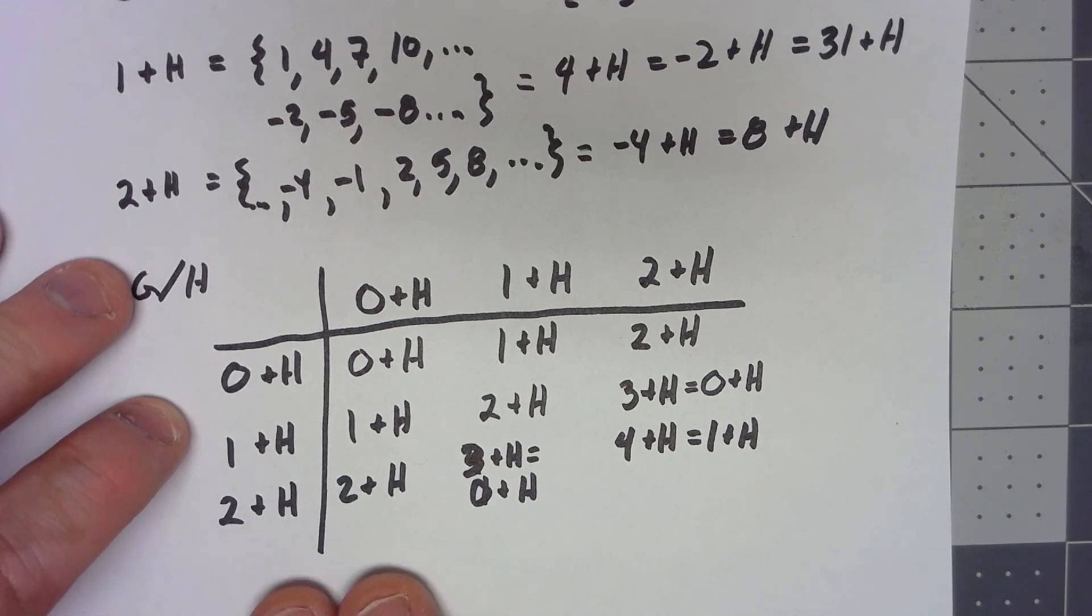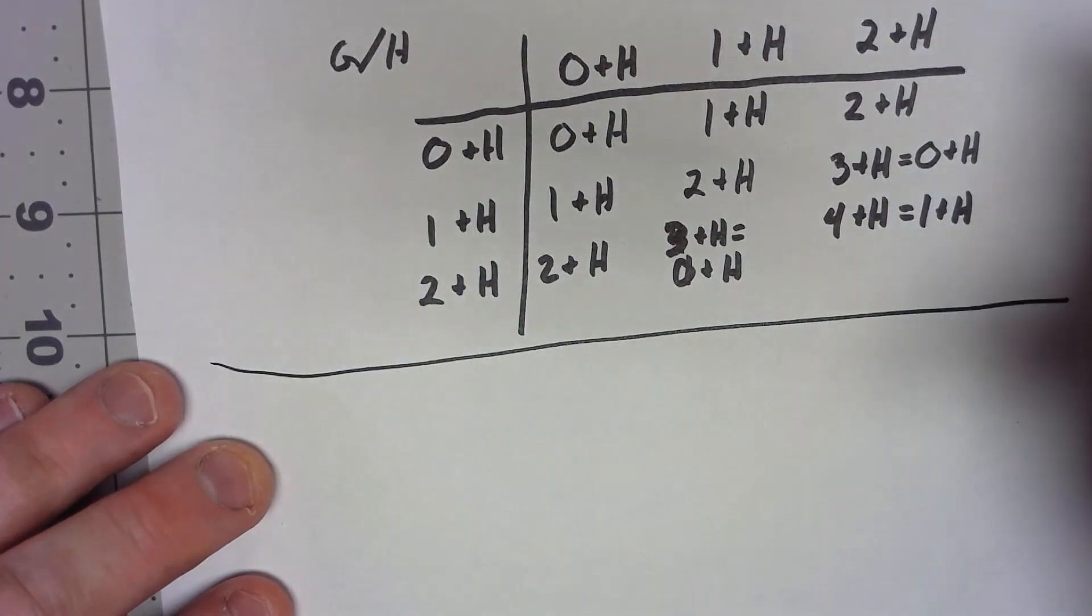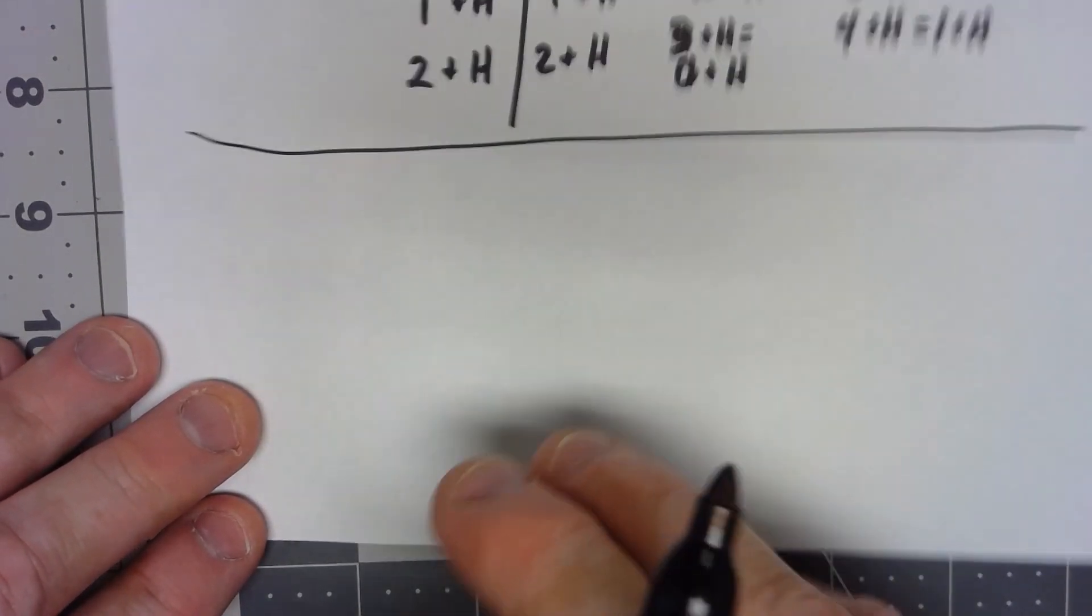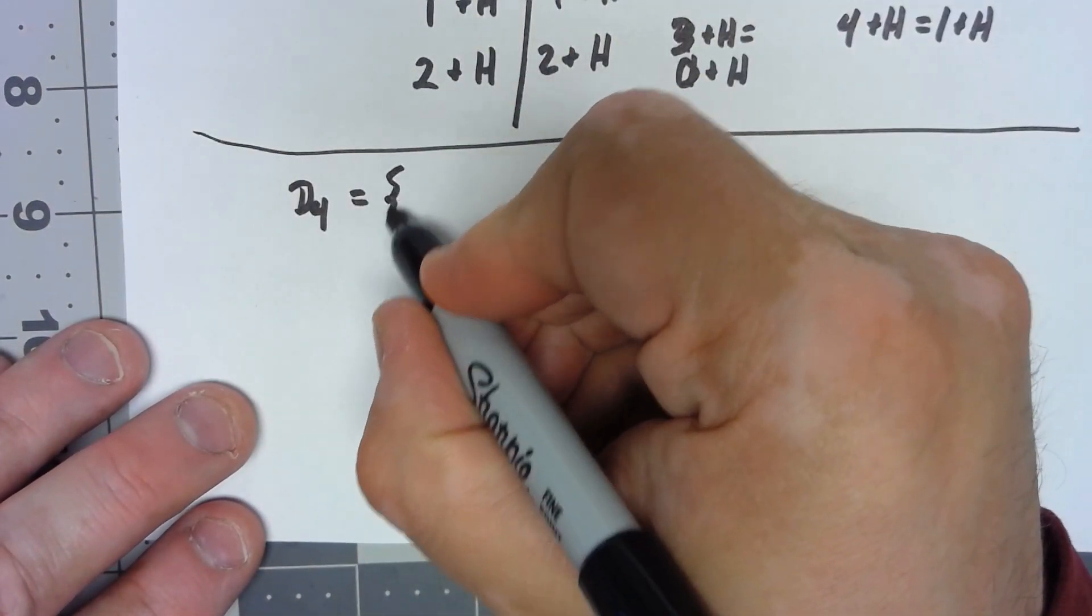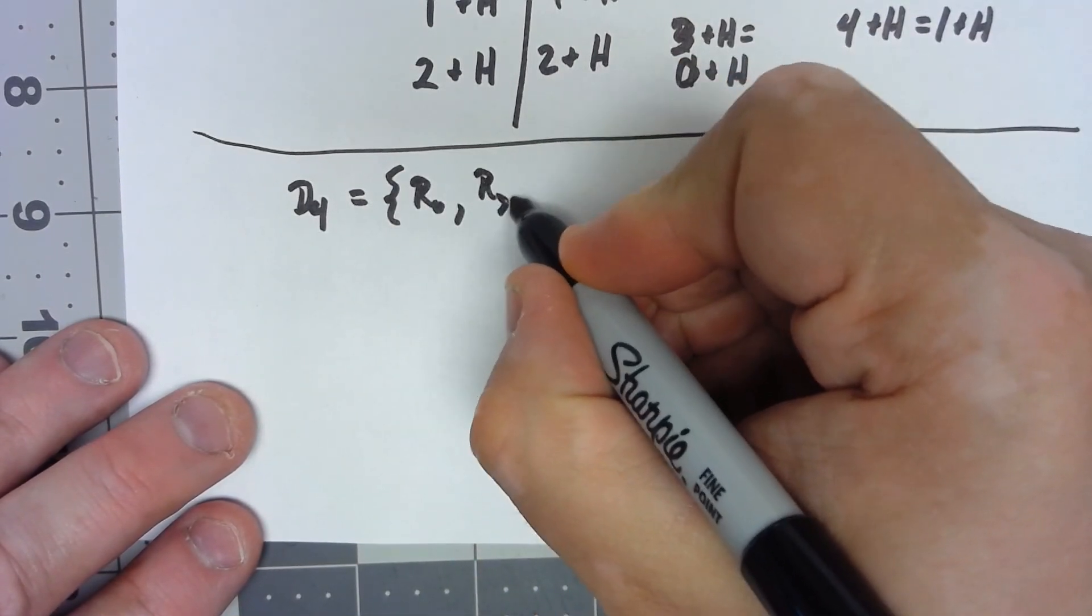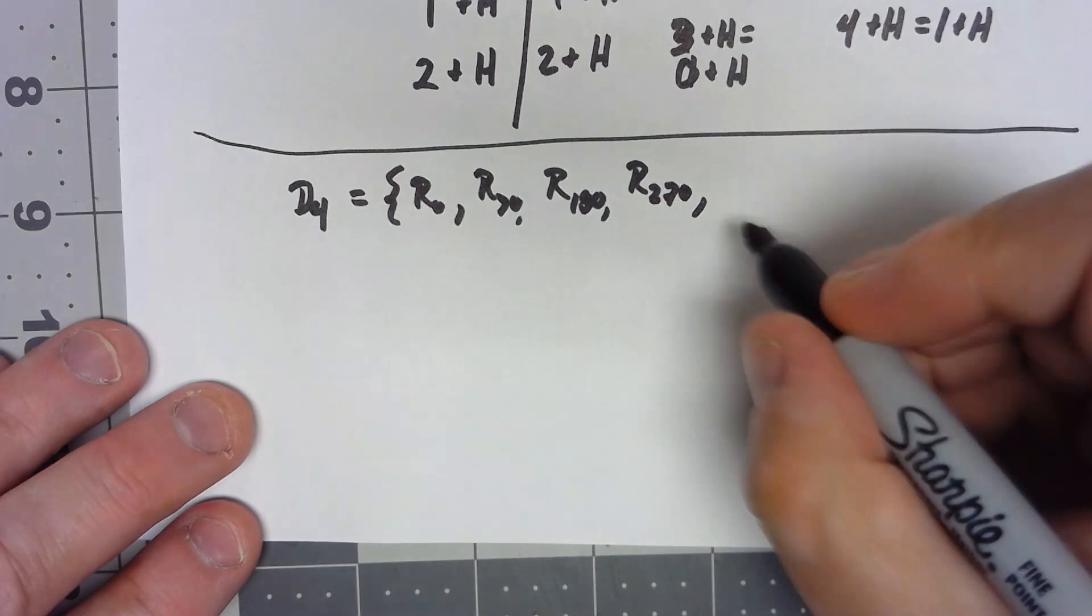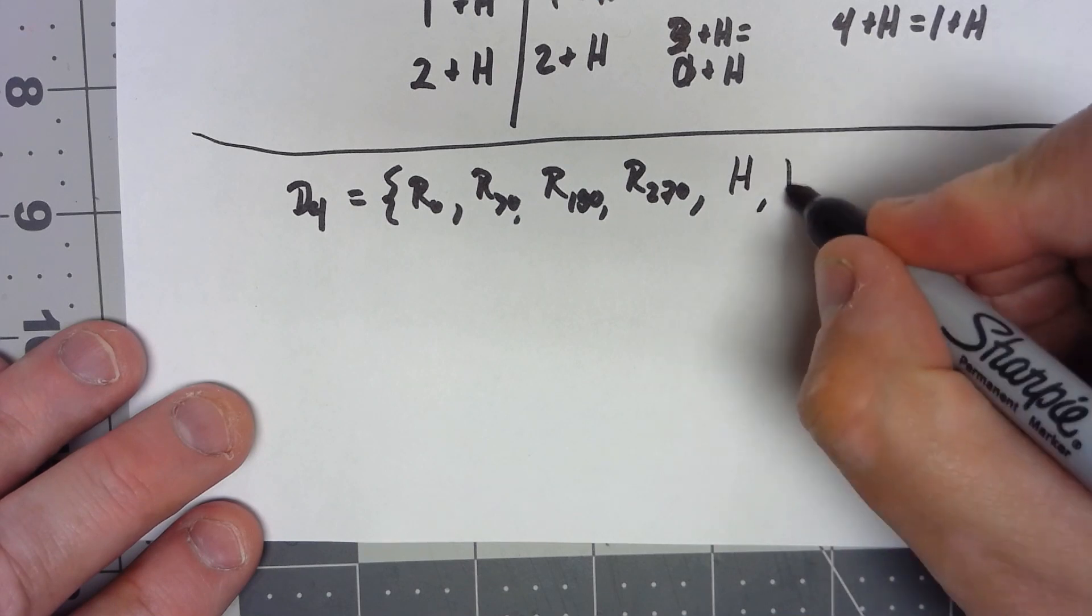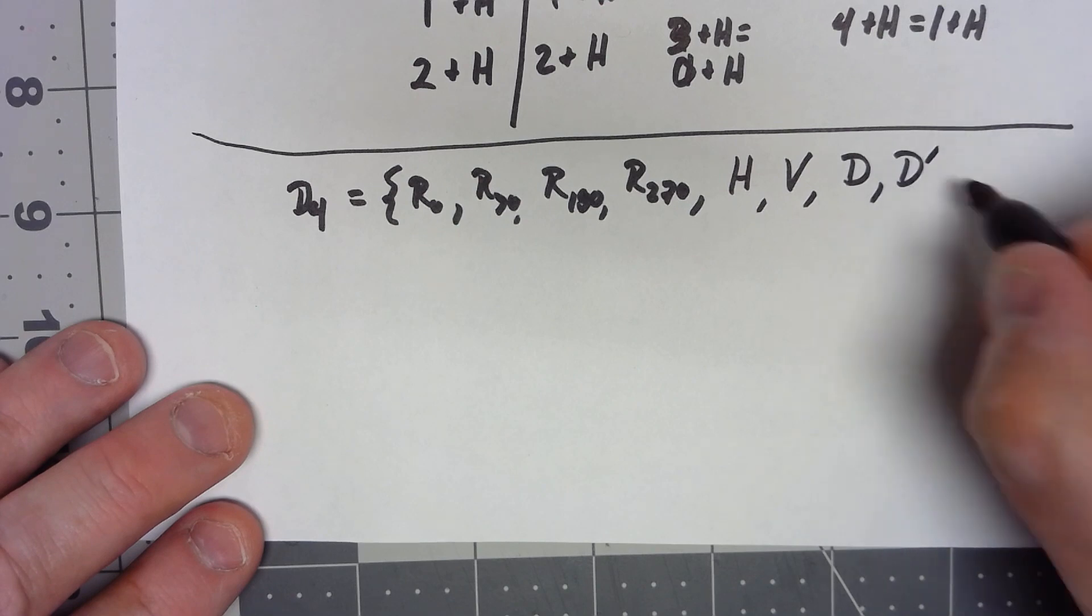So let's start to take a look at another example. Let's take a look at the group D4. We've worked with this group several times. So we know this thing has an R0, which is the identity, an R90, an R180, an R270, and then it has four different reflections. We've got a horizontal reflection, a vertical reflection, a diagonal reflection, and an off diagonal reflection.